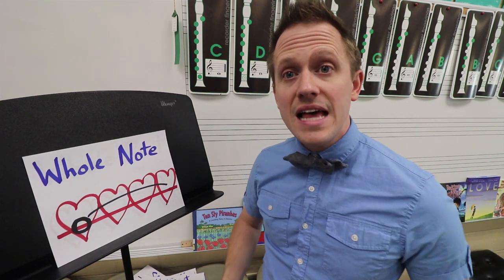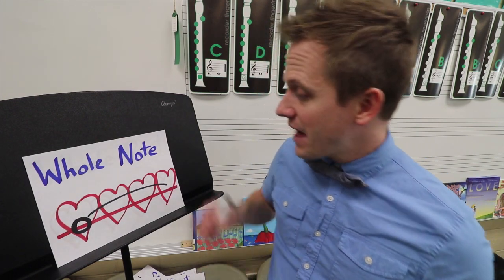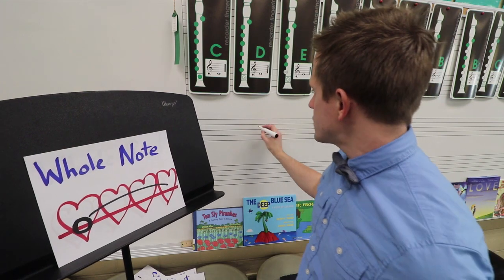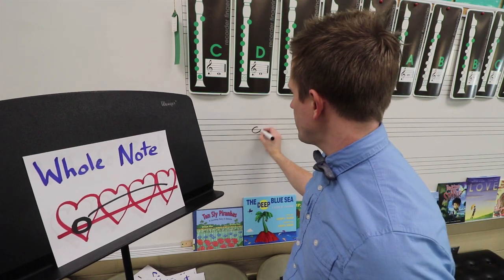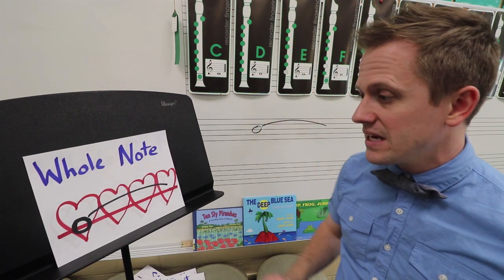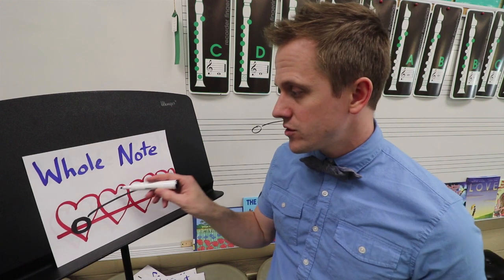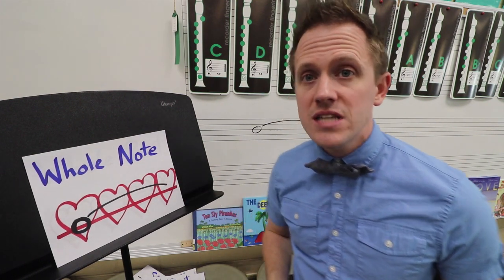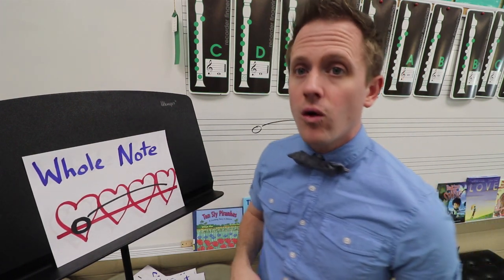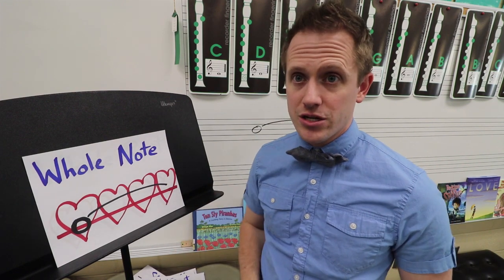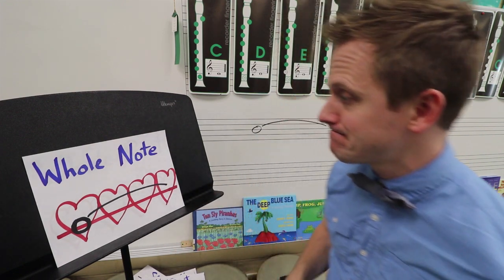Next, let's talk about whole notes. A whole note looks like a half note but without a stem — it's just a circle. This whole note takes four whole beats: one, two, three, four. A whole note takes the whole measure — that's why we call it a whole note.